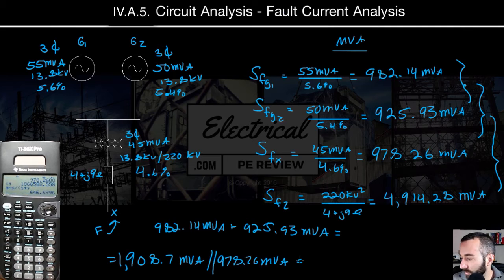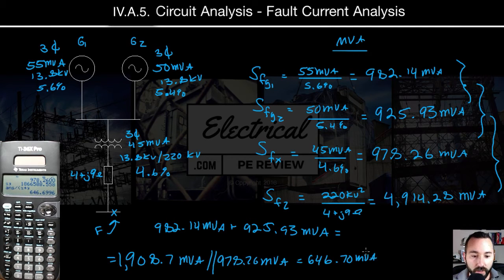That's going to give us 646. So 646.70 MVA. And then last, we're going to do it in parallel with the line impedance contribution. That's this value right here. So last is going to be 4914.28 MVA.